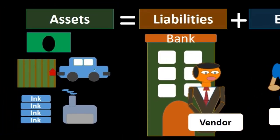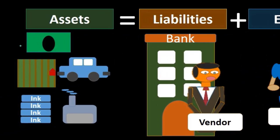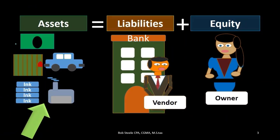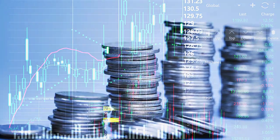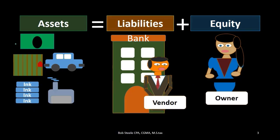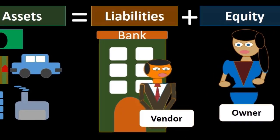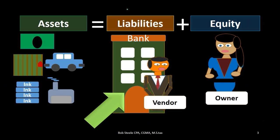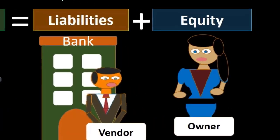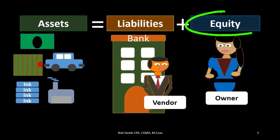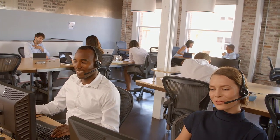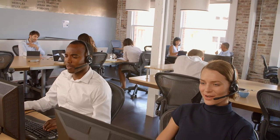Assets are those things that the company has in order to help generate revenue in the future — revenue generation being the goal of the organization. Liabilities are something owed in the future due to something that happened in the past — a past transaction resulting in a future obligation. Then we have the equity section, which could be owner's equity for a sole proprietor, partnerships equity for a partnership, or stockholders equity for a corporation.